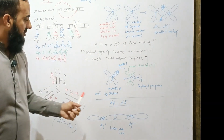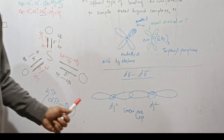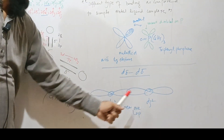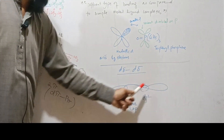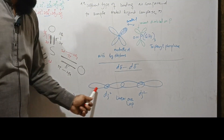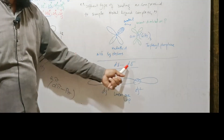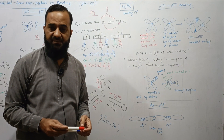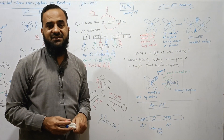There is also dσdσ bonding found between dz²-dz² orbitals. Because these orbitals have two lobes they can overlap in a linear manner, resulting in the formation of a sigma bond called dσdσ. This concludes the discussion of pπpπ, dπpπ, and dπdπ bonding in elements. Thank you very much.